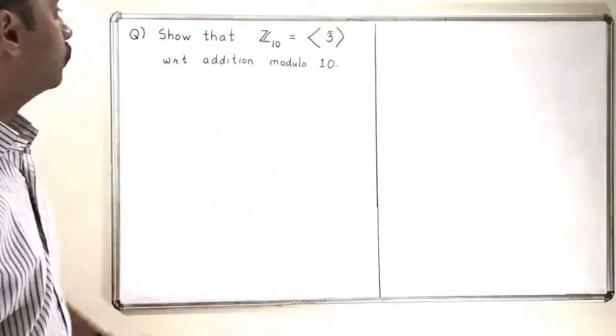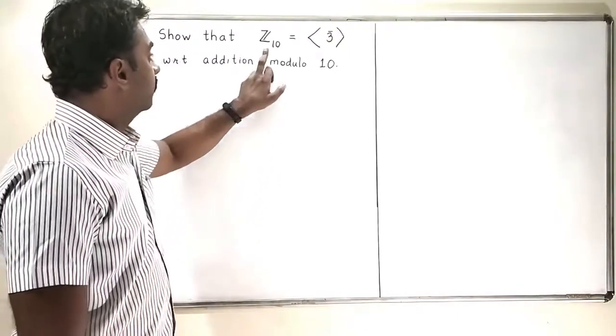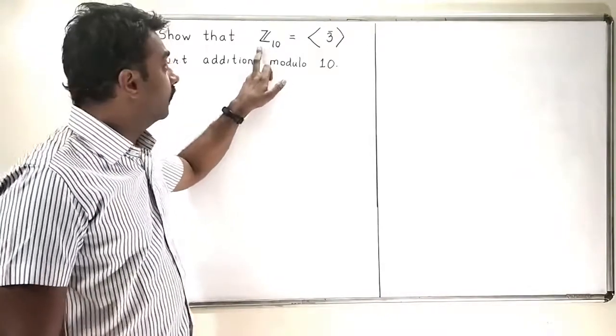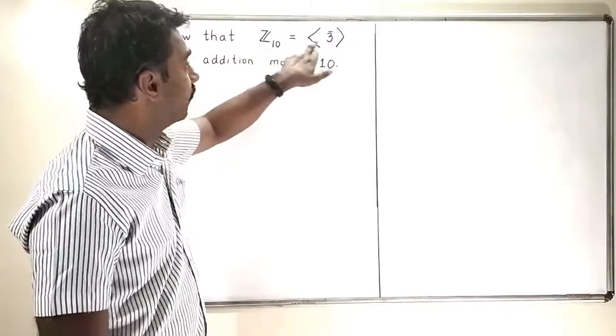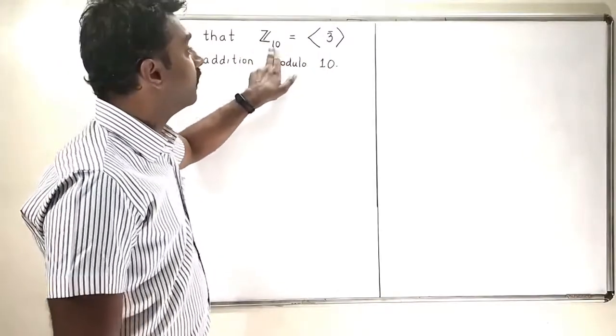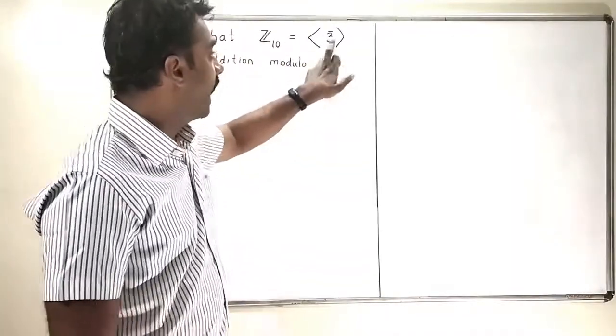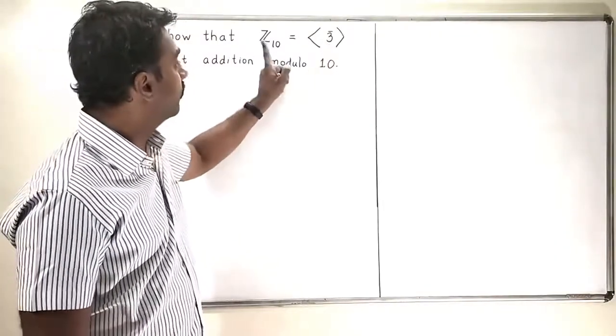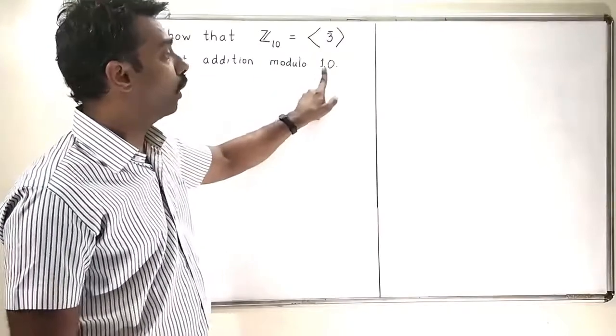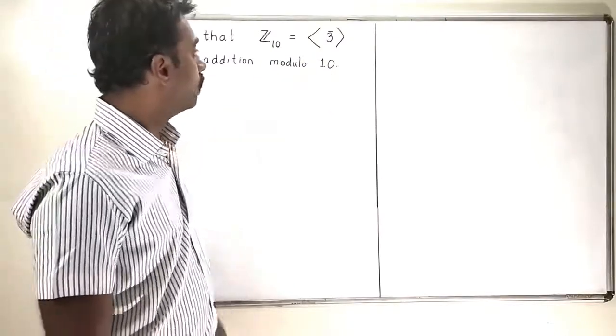In this problem, we have to show that the group Z₁₀ is generated by 3 bar. By this line, I am trying to tell that Z₁₀ is a cyclic group and 0 is a generator of that group. 3 bar is the generator of that group and Z₁₀ is a group with respect to the operation addition modulo 10.